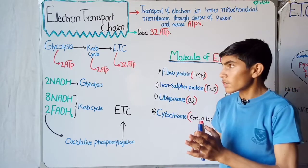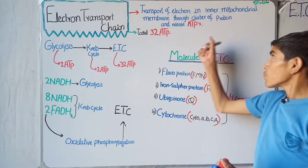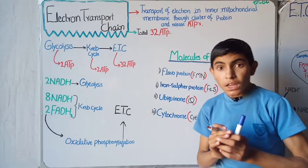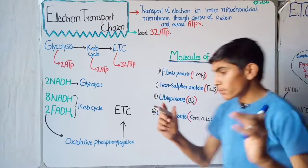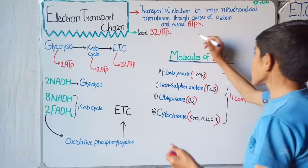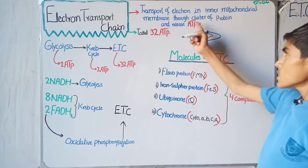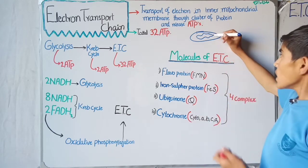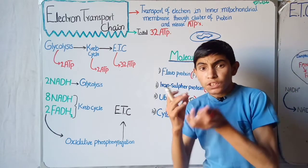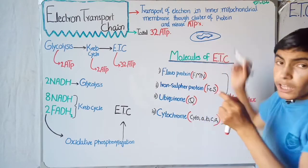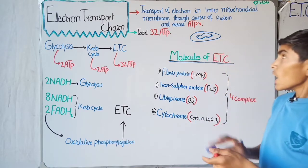The electron transport chain is the transport of electrons through the inner mitochondrial membrane via a cluster of proteins, releasing ATP as a source of energy. It is the flow and motion of electrons in the inner mitochondrial membrane. The mitochondria has an outer membrane and an inner membrane, and the electron transport chain occurs at this inner membrane — it is the site where electrons jump from one protein to another and release ATP.